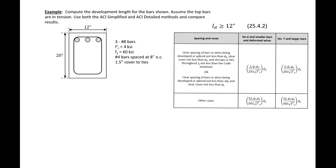In this example problem we're going to compute the development length for the bars shown, and we're going to use both the ACI simplified and ACI detailed methods and compare the results.